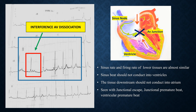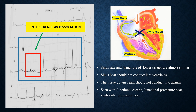The tissue downstream should not conduct into the atrium — this means the junctional QRS complex should not conduct retrogradely into the atria. When the beat from the sinus downward blocks, and the beat from the lower pacemakers also gets blocked and does not conduct into the atria, this results in AV dissociation — no association between the two structures. The rates also need to be almost similar, because if not, one beat may conduct and capture the other chamber.